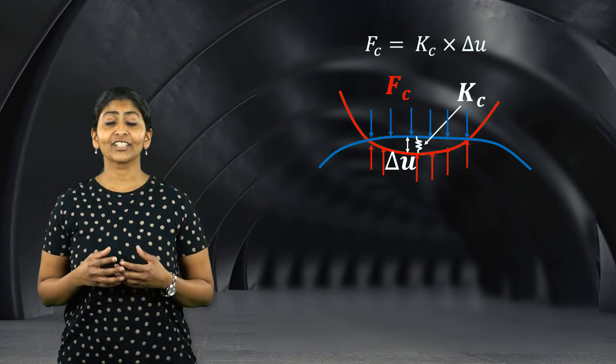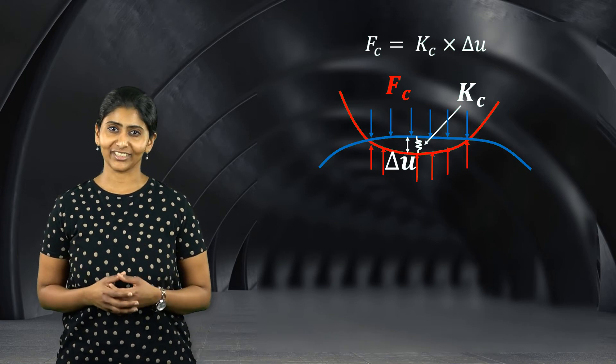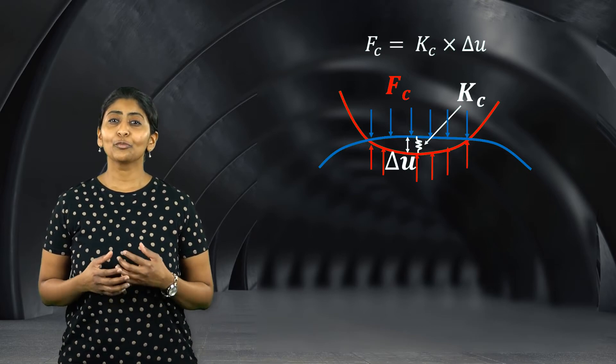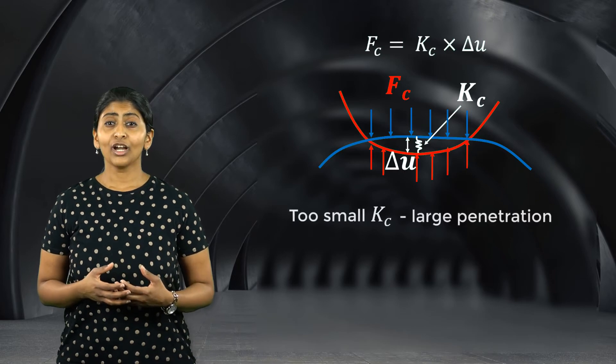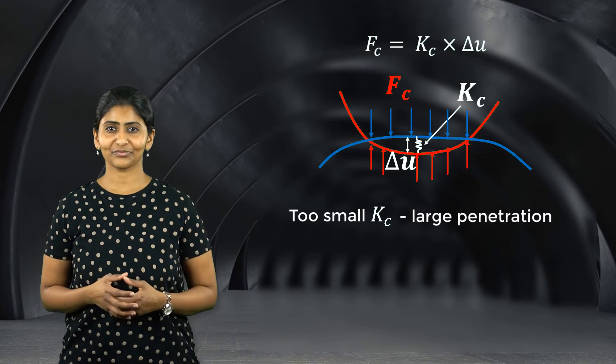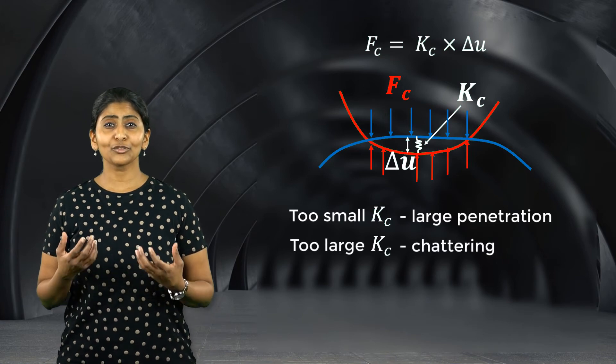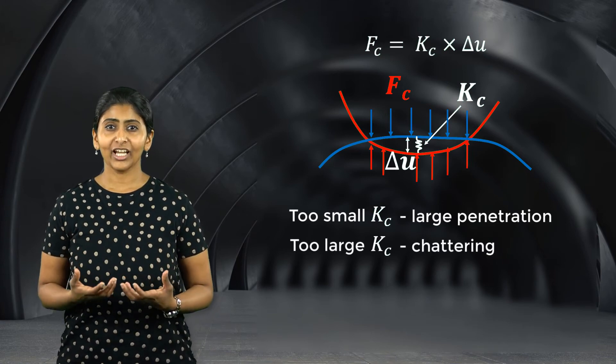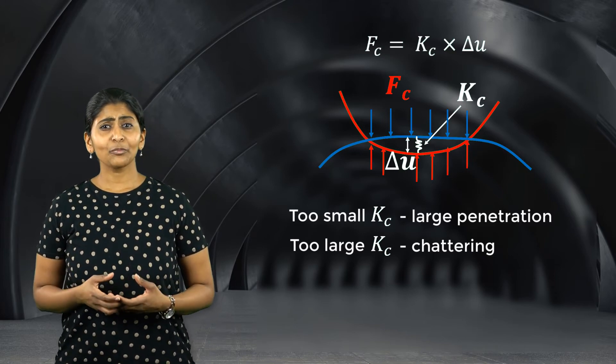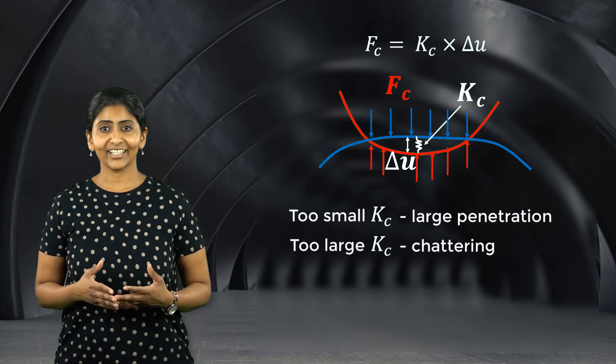This restoring force is the contact force which leads to deformation of the contacting surfaces. Thus, the contact stiffness should be large enough to provide a sufficient contact force which in turn will reduce the penetration to close to zero. But if the contact stiffness is too high, that is if we make the two contacting surfaces very stiff, we may observe some contact chatter. So, an appropriate value of contact stiffness should be chosen such that both these criteria are fulfilled.